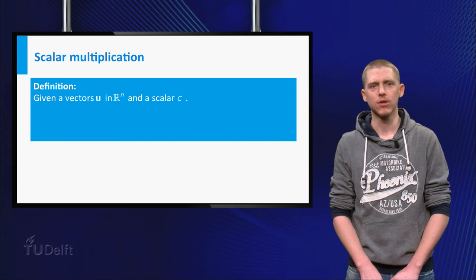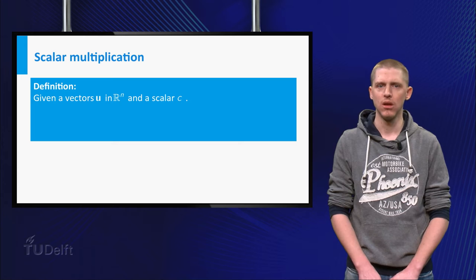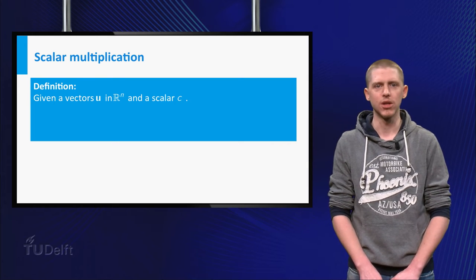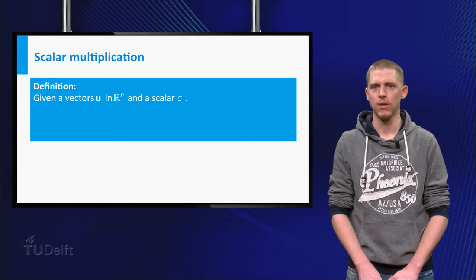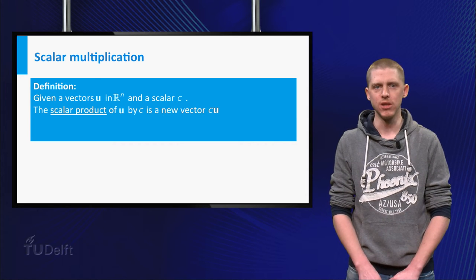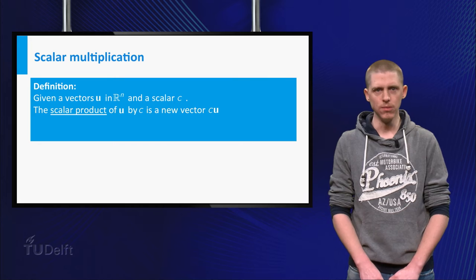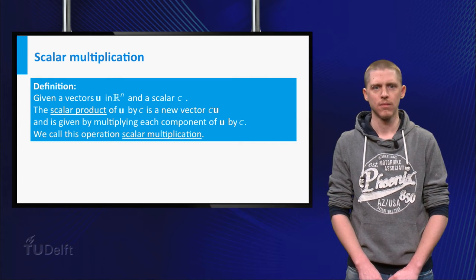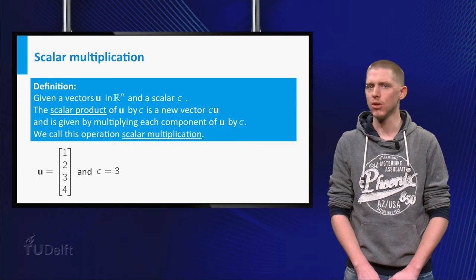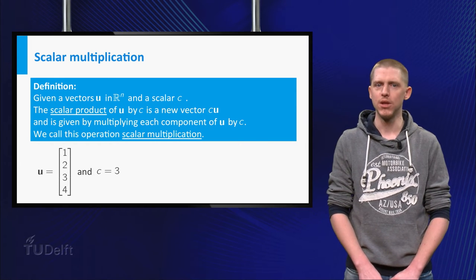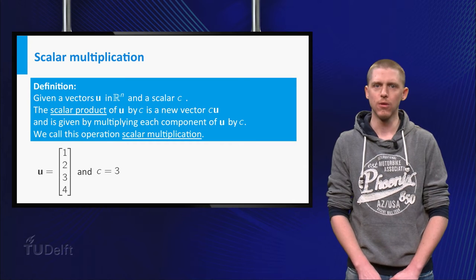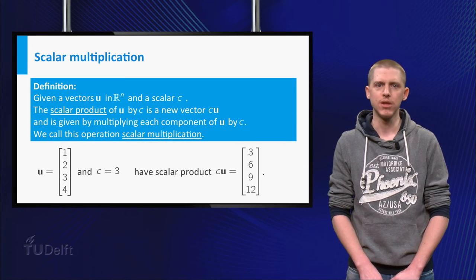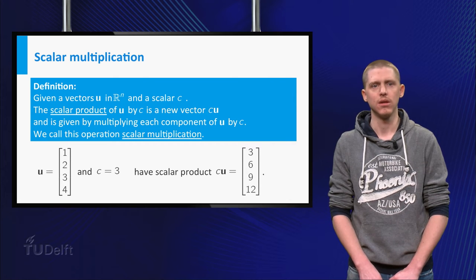You can also multiply a vector u by a scalar c, which is called scalar multiplication. Remember that a scalar is just a single number. The scalar multiple of u by c is now a vector cu, where each component of u has been multiplied by c. As an example, let us multiply a vector from R4 and a scalar. Take u as 1, 2, 3, 4 and c as 3. The scalar product of u by c is now 3, 6, 9, 12.